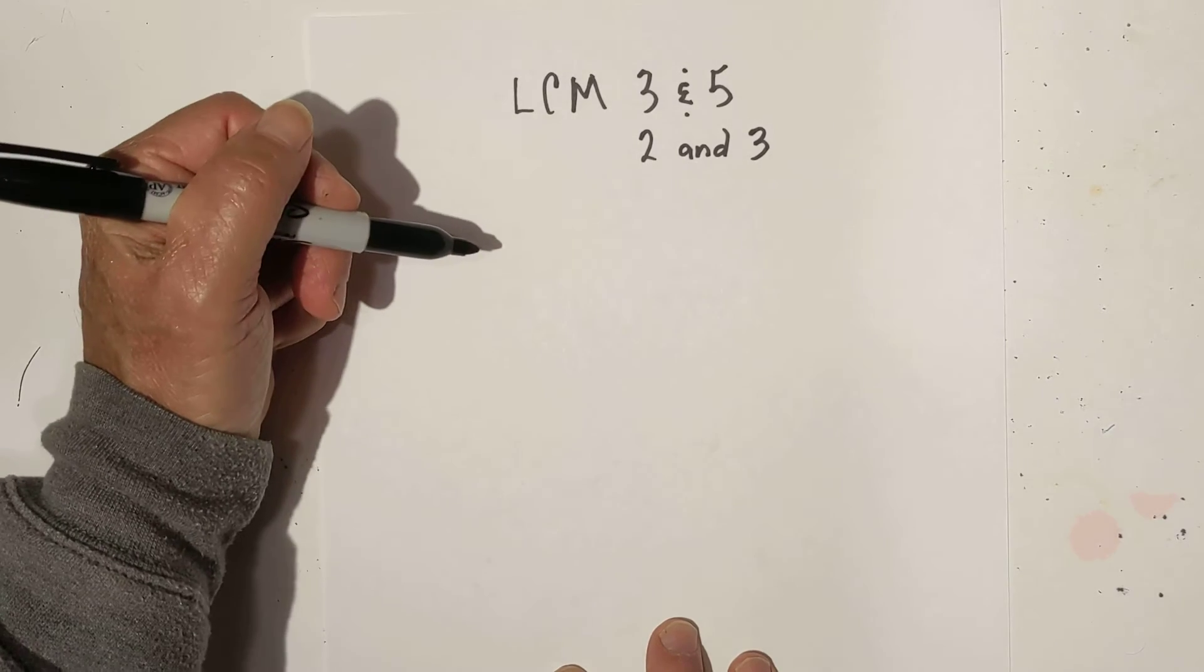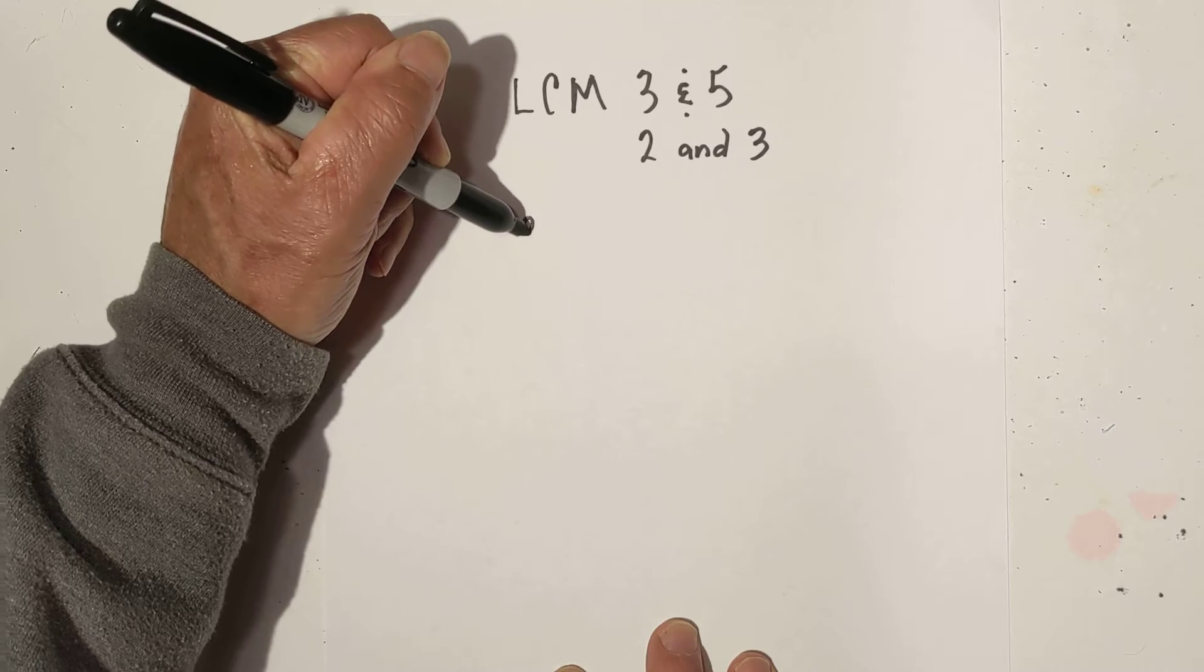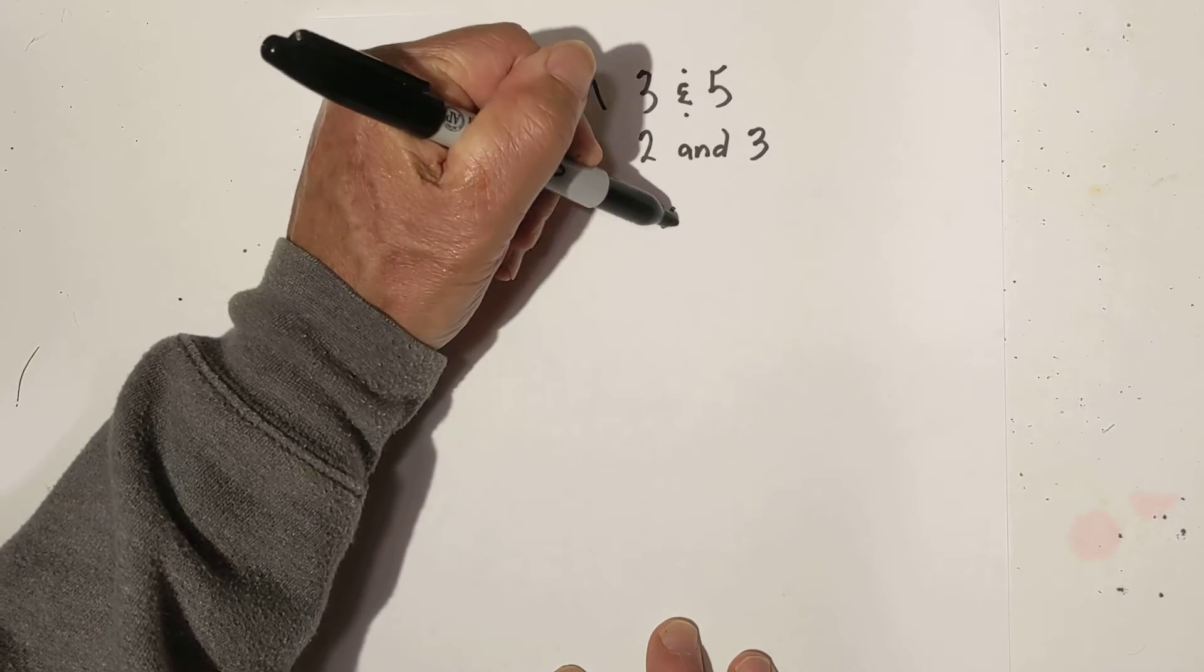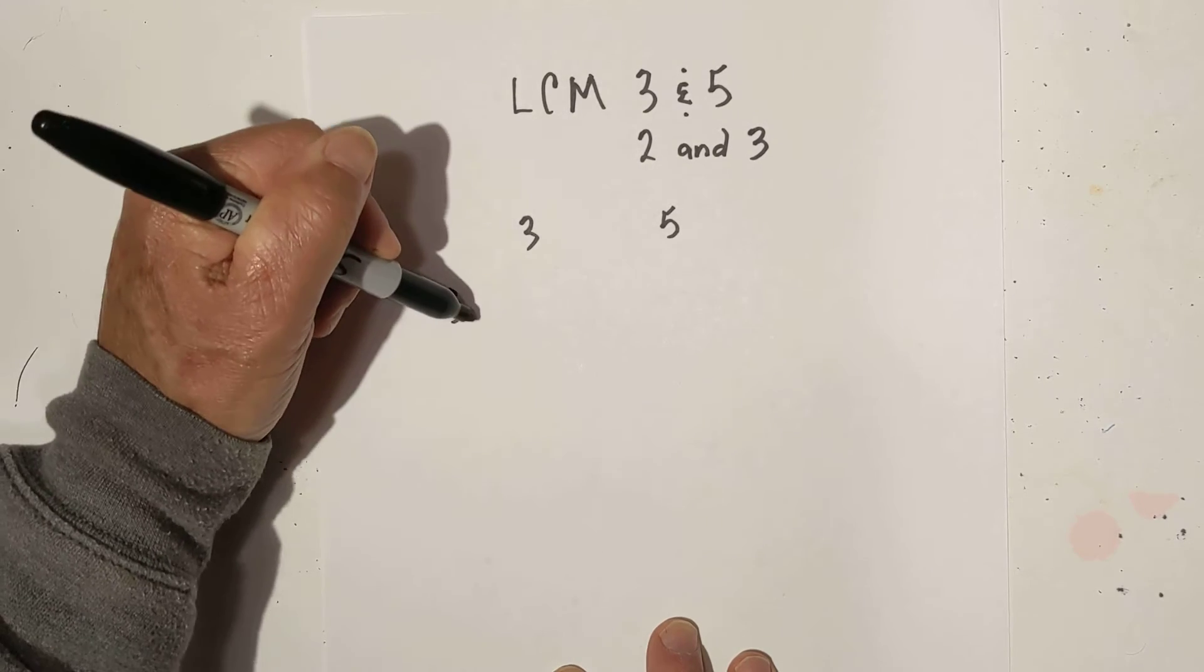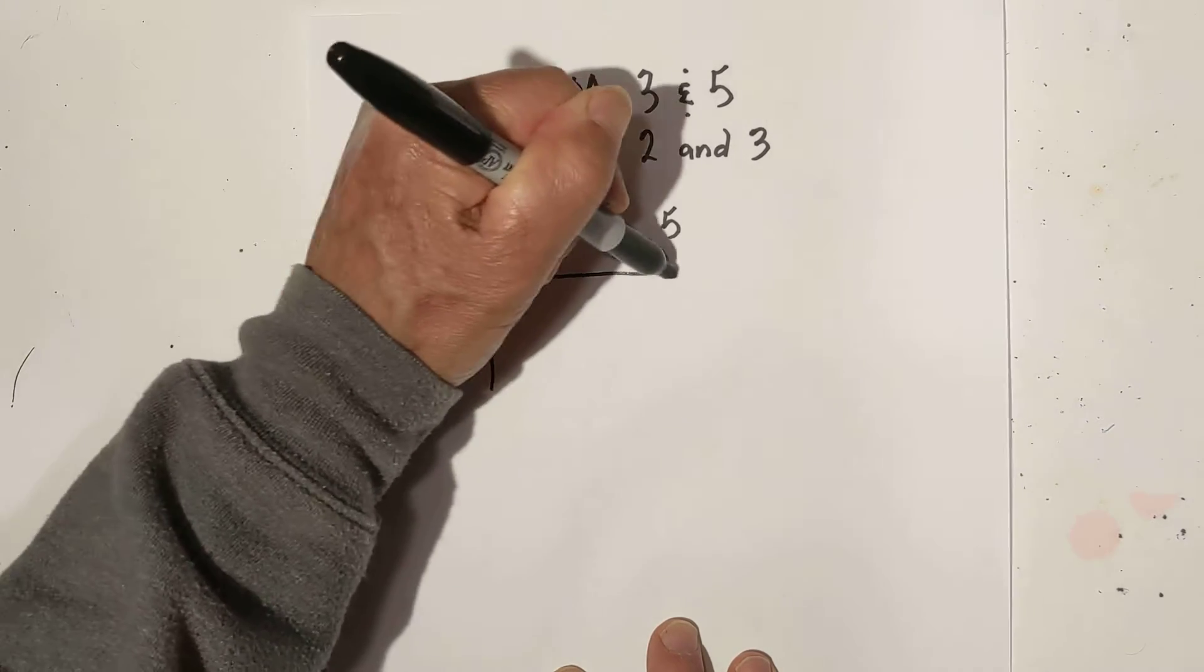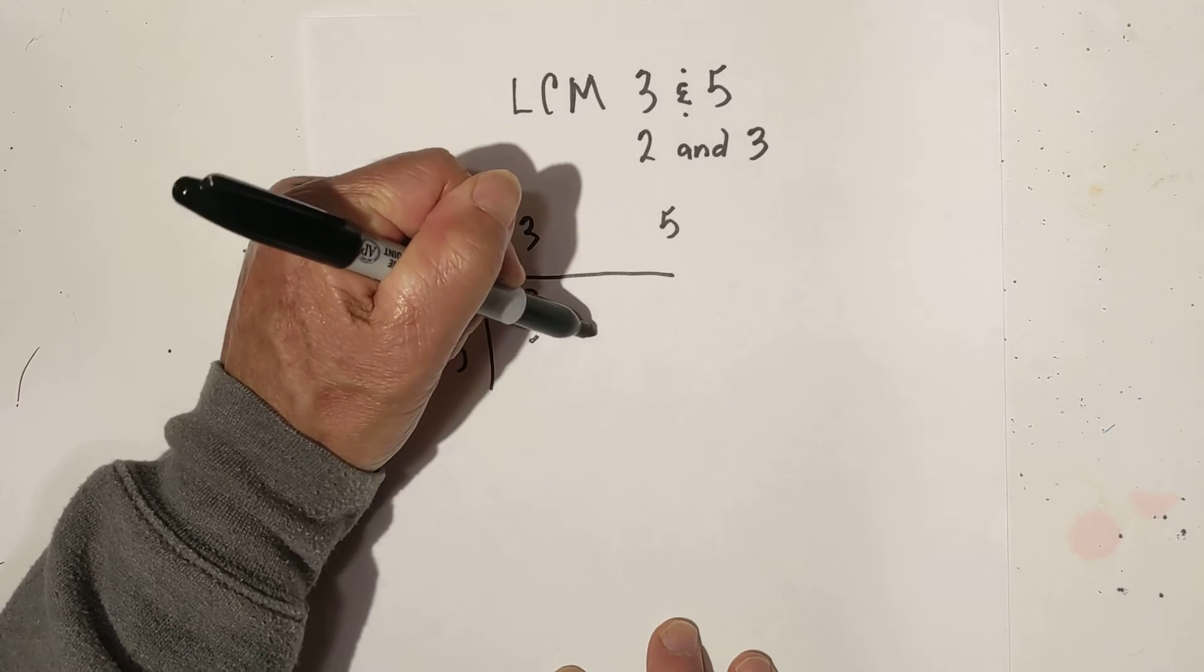Normally I would create a factor tree for each number. The factor tree for 3 is 3 because it's a prime number, and for 5 it's a prime number. Then I create a chart and put the number and its factors in it.